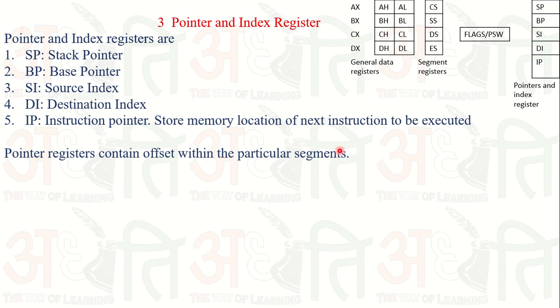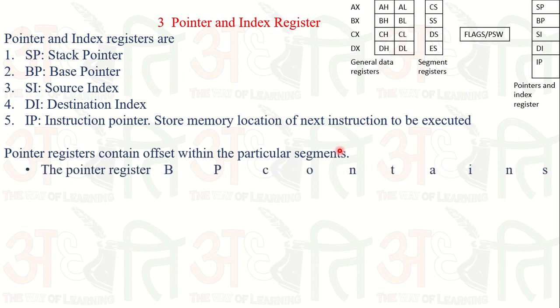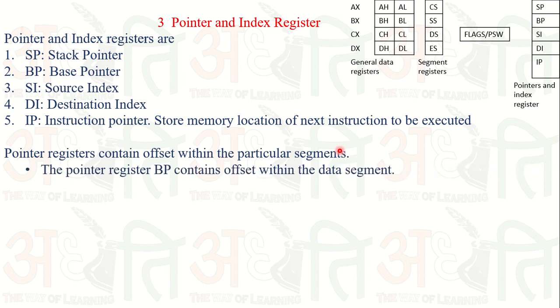The pointer registers contain the offset within a particular segment. The SP (Stack Pointer) contains the offset within the stack segment, the BP (Base Pointer) contains the offset within the data segment, and the IP contains the offset within the code segment. So each pointer register holds the offset address for its respective memory segment.